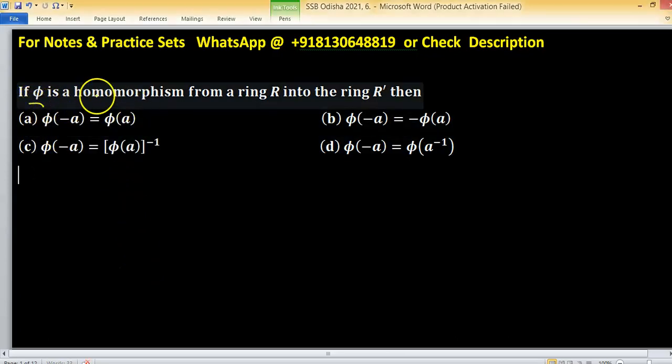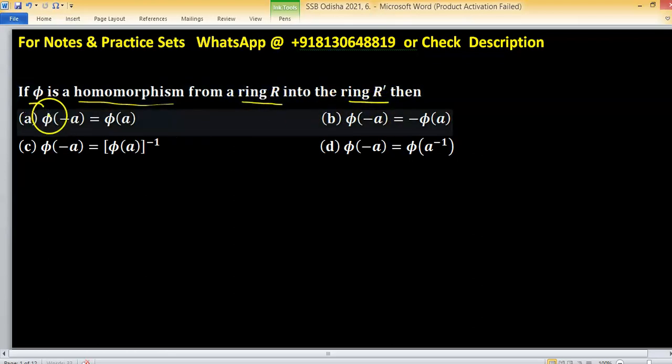In this problem, phi is a homomorphism from a ring R to ring R dash, then we have to check which one option is correct.